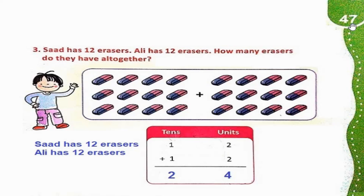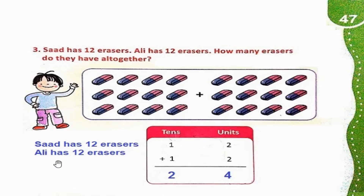Page 47, Question number 3: Saad has 12 erasers. Ali has 12 erasers. How many erasers do they have altogether? Saad has 12 erasers and Ali ke paas bhi 12 erasers hain.